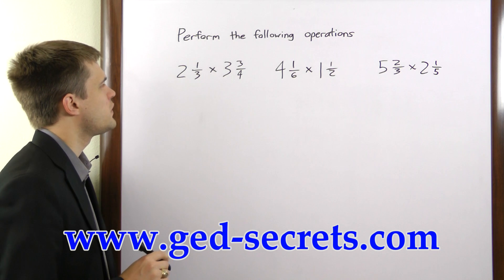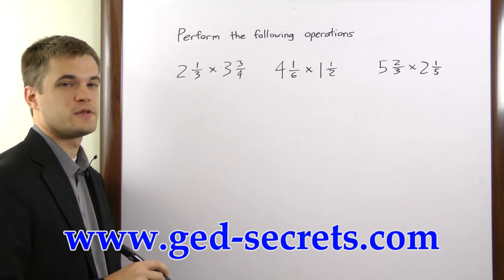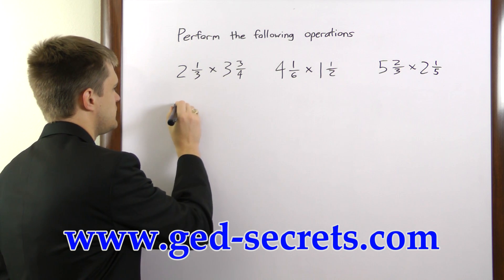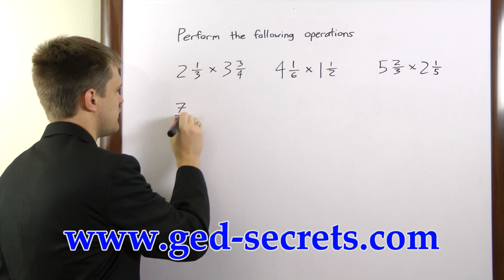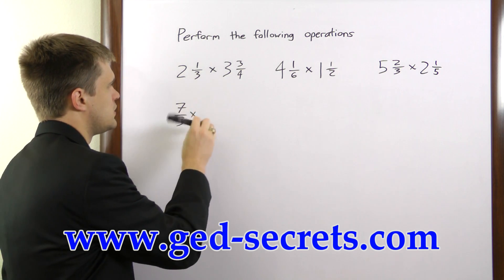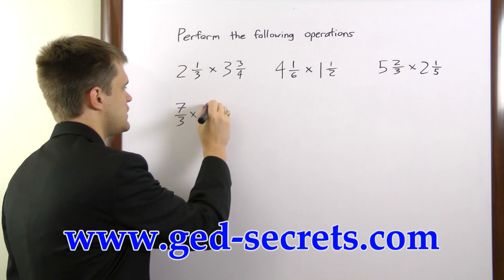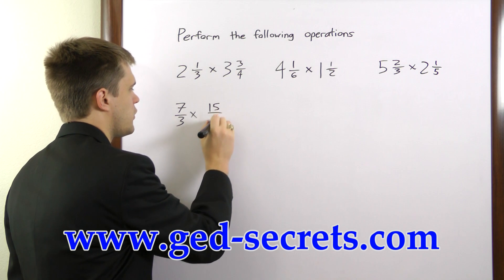First, we have 2 and 1 third times 3 and 3 fourths. 3 times 2 is 6, plus 1 is 7, so we have 7 over 3 times 4 times 3 is 12, plus 3 is 15, 15 over 4.